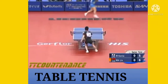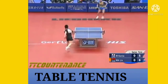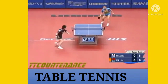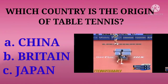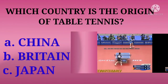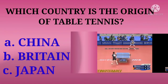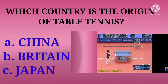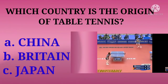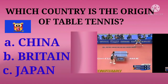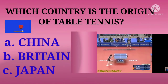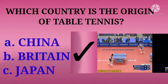Next game is table tennis. Which country is the origin of table tennis? Kis desh ne table tennis ka avishkar kya hai? Options are China, Britain, or Japan. The right answer is Britain.